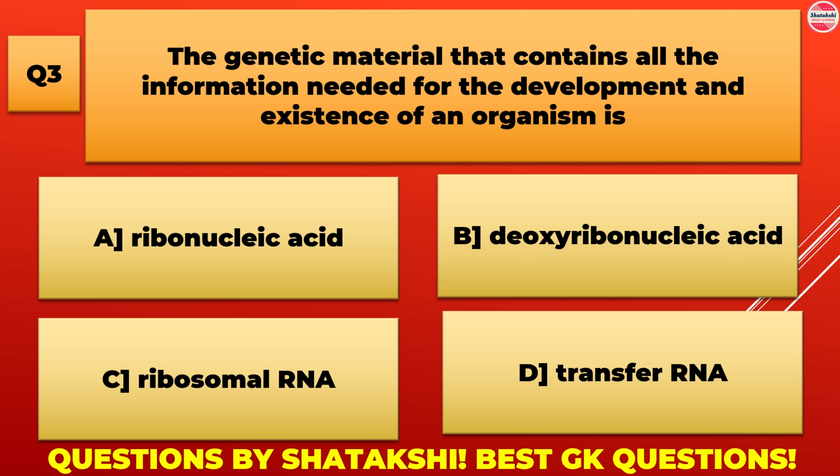The genetic material that contains all the information needed for the development and existence of an organism is: A. Ribonucleic Acid, B. Deoxyribonucleic Acid, C. Ribogen. B. Deoxyribonucleic Acid is the correct answer.